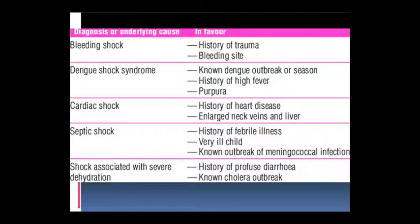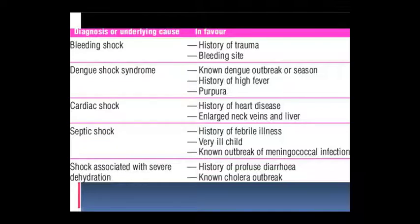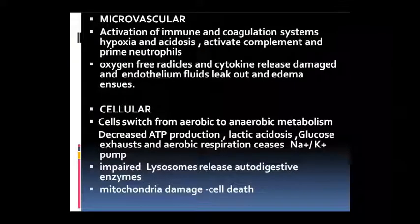Ab diagnose wagera - bleeding shock to trauma ki history aur bleeding site ko dekh sakte ho. Dengue shock syndrome hua ho to dengue outbreak ya season ko pehle pata kariye, high fever ki history dekhiye, purpura dekhiye. Cardiac shock mein heart disease ki history dekhiye, neck vein aur liver enlargement dikhai degi. Septic shock mein febrile illness ki history milegi. Bahut zyada beemar aapko bacha dikhai dega, meningococcal infection wagera dekh sakte ho. Aur severe dehydration se juda shock hai to profuse diarrhea ki history dekhiye, cholera wagera dekhiye us area mein.